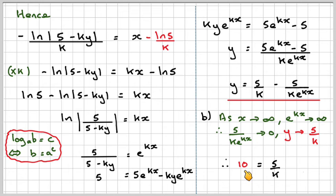Therefore, as y goes large it goes to 10. So 10 will equal 5 over k, which gives you that k is 5 over 10, which is 0.5.